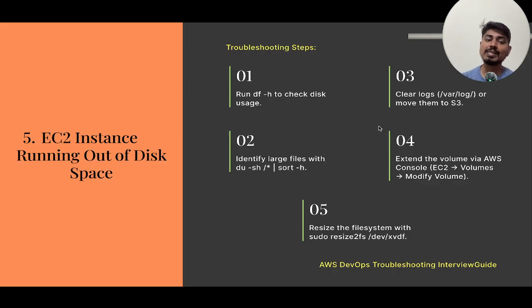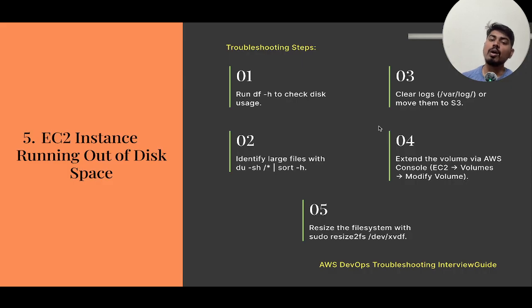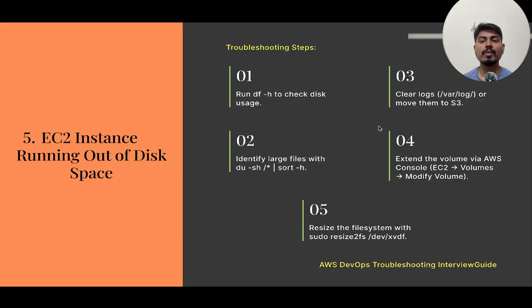The next question is: EC2 instance running out of disk space. First, check disk usage with the df -h command. Next, identify large files at the OS level using du -sh and sort in human-readable format. After finding large files, clear the logs or move large files to an S3 bucket, and swap them in and out as required.